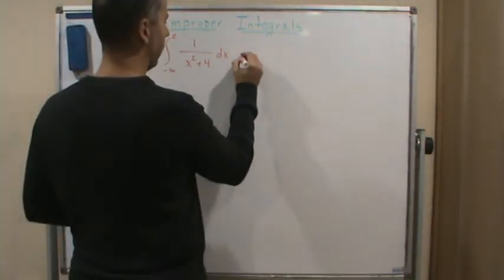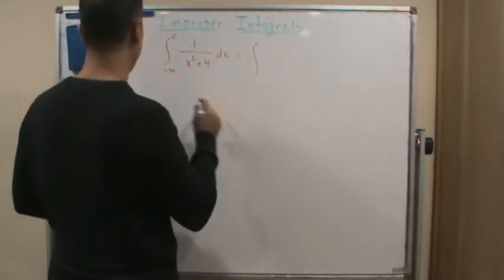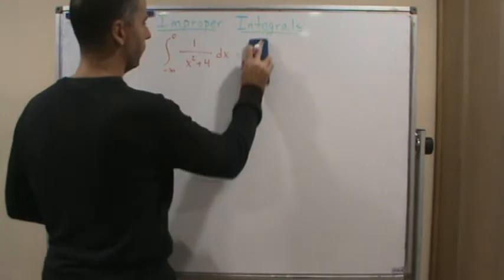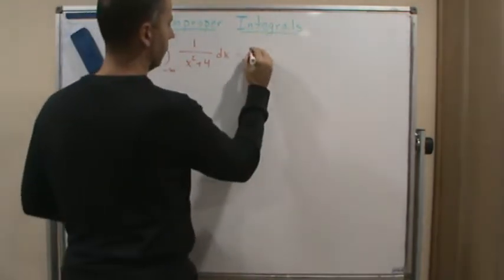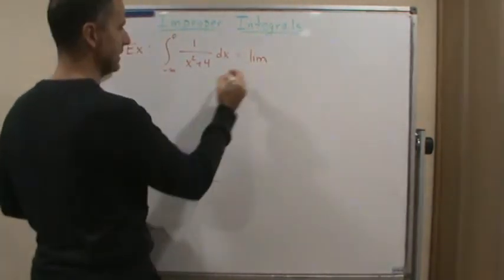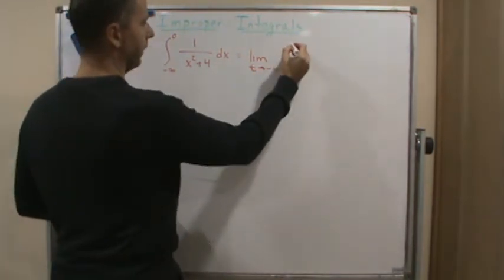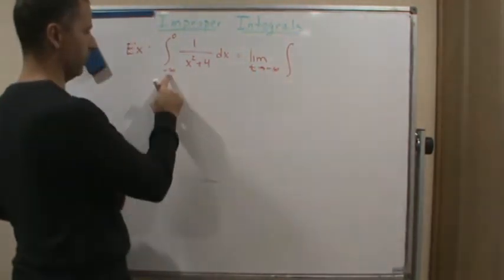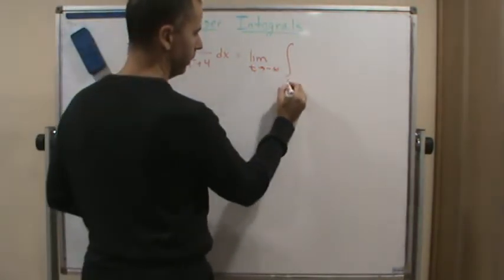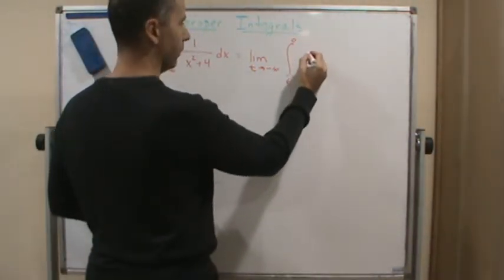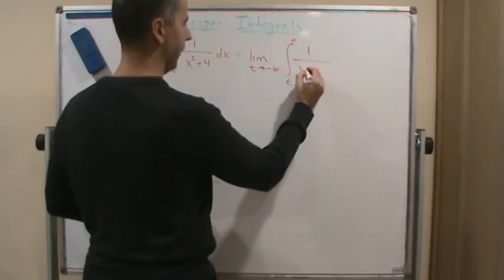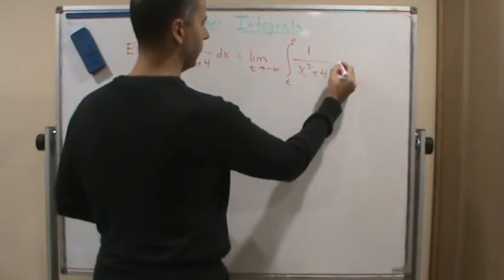Let's just rewrite this. This is going to be a limit as t approaches negative infinity. Now I'm going to rewrite the integrals from t to zero as 1 over x squared plus 4 dx.